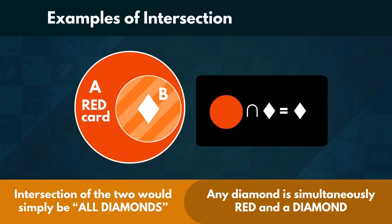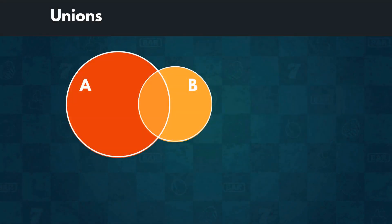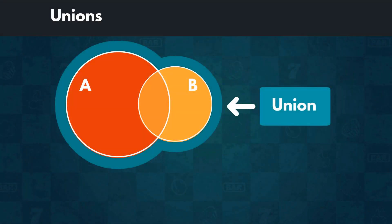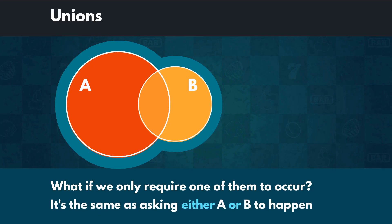Great job everybody! We use intersections only when we want to denote instances where both events A and B happen simultaneously. In this lecture we are going to explain what a union of two events is and how we can use it. Now we know which part of the graph represents the intersection of A and B, but what if we only require one of them to occur, regardless which one? That is the same as asking either A or B to happen. In such cases we need to find the union of A and B.